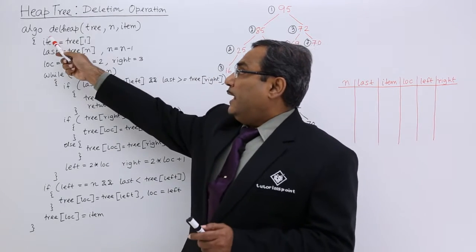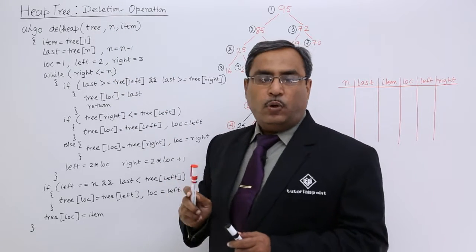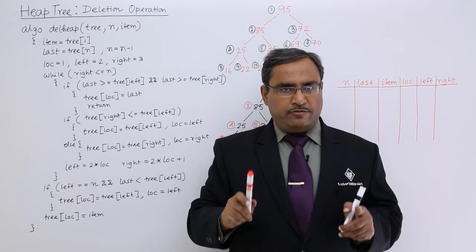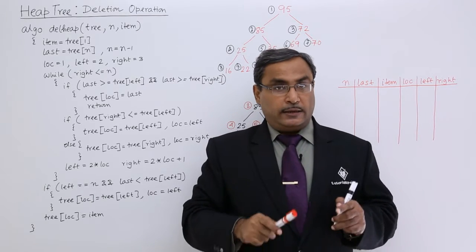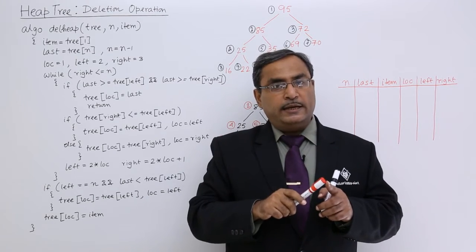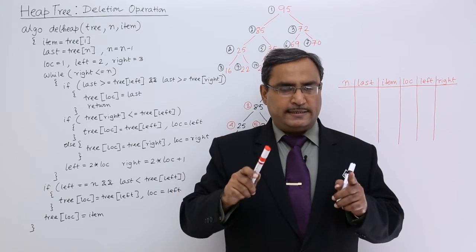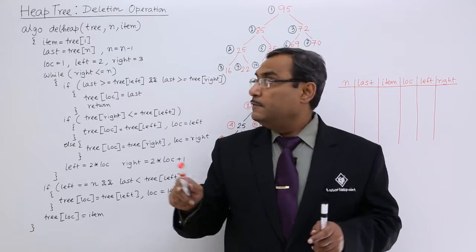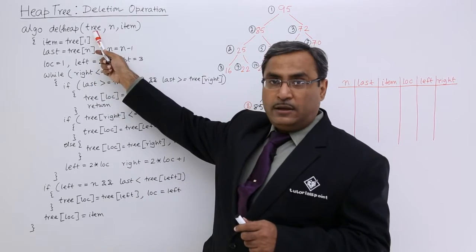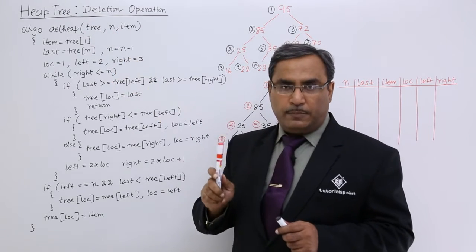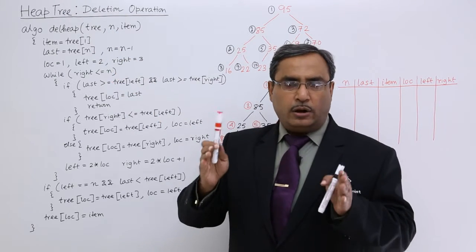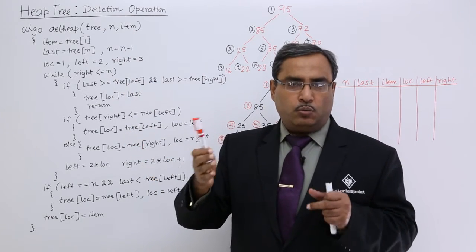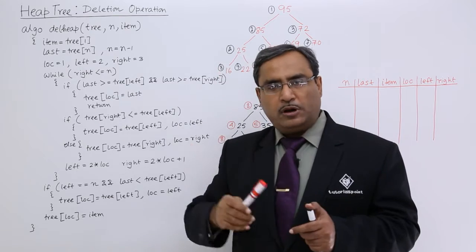See the algorithm: deletion with heap tree, parameters n and item. What is tree? That is the array. As heap tree is a complete binary tree, we have discussed earlier that heap tree should be represented in array form because there will be no free space up to n locations. Tree is the array containing the heap tree, n is the number of valid data or number of nodes, and item is the output argument — whatever is deleted will be stored in item.